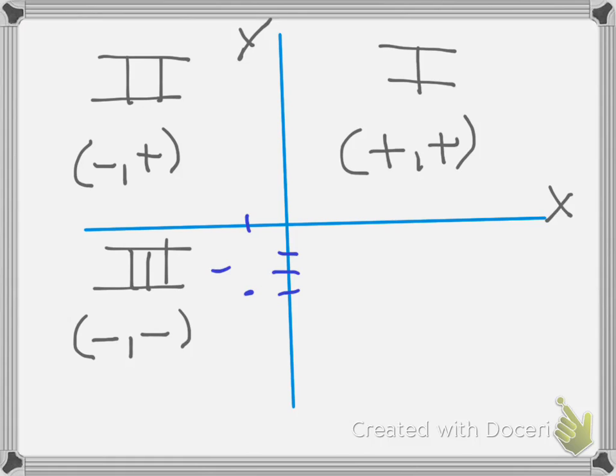That point would be minus one comma minus three. So we see that both of our components are negative in quadrant three. I'm trying not to put you to sleep.